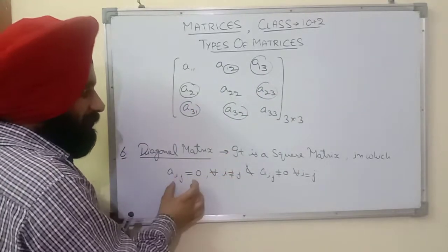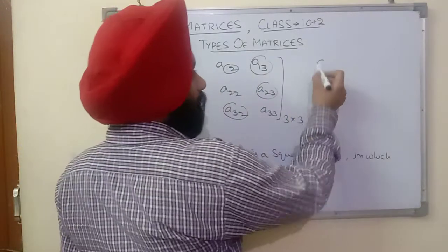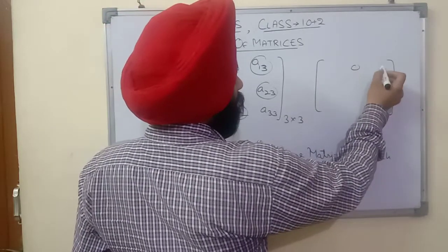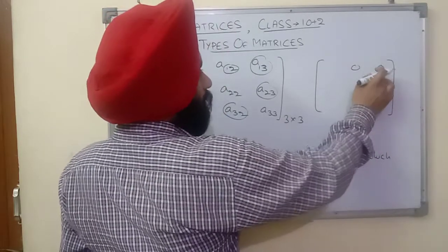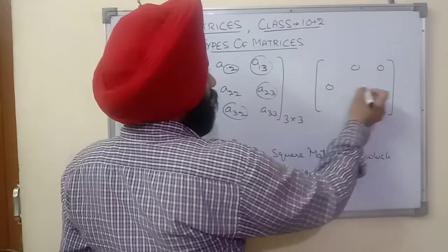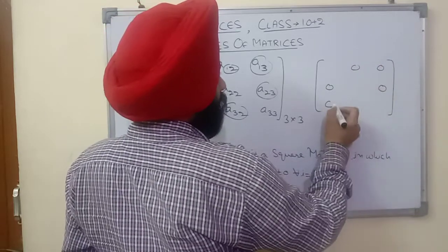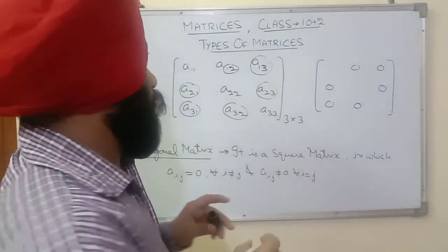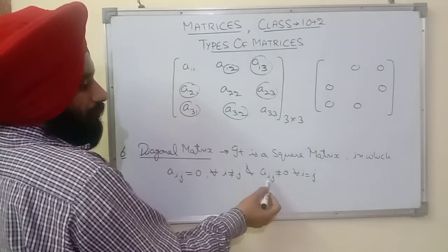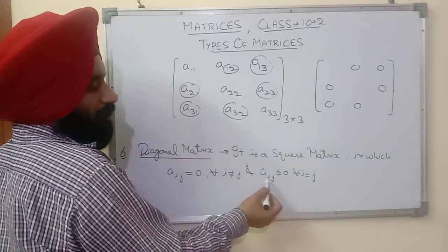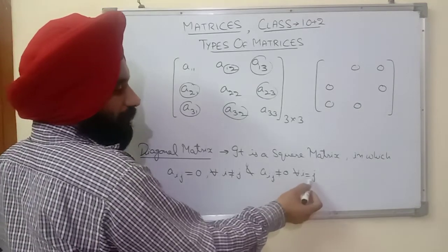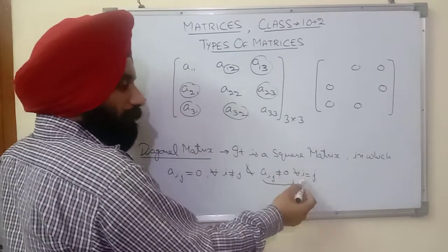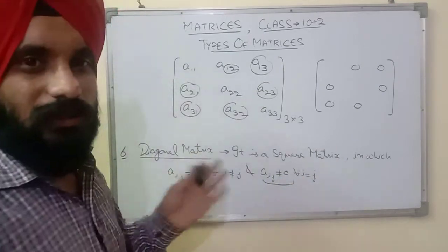So these off-diagonal elements will be 0: A12, A13, A21, A23, A31, and A32 are all zero. The elements that will be non-zero are those where i equals j — that is, the diagonal elements A11, A22, and A33 will be non-zero. This is a diagonal matrix.